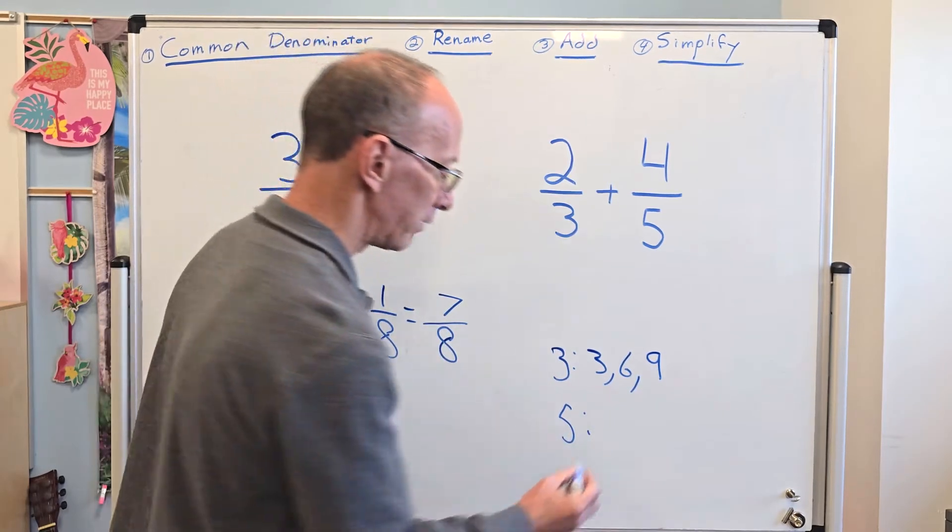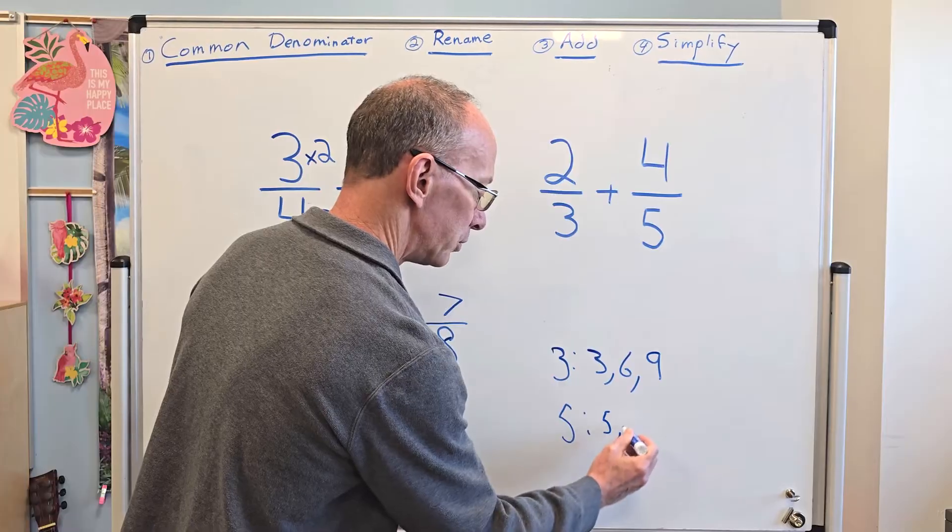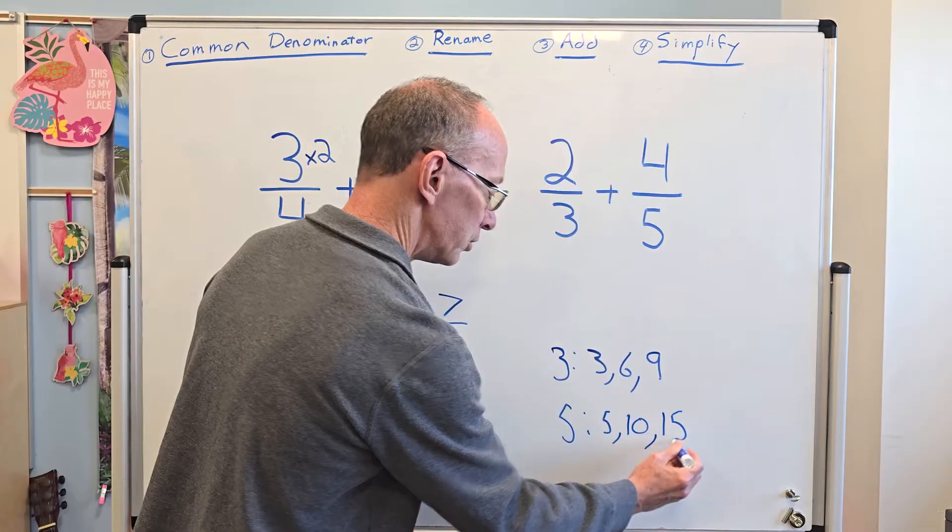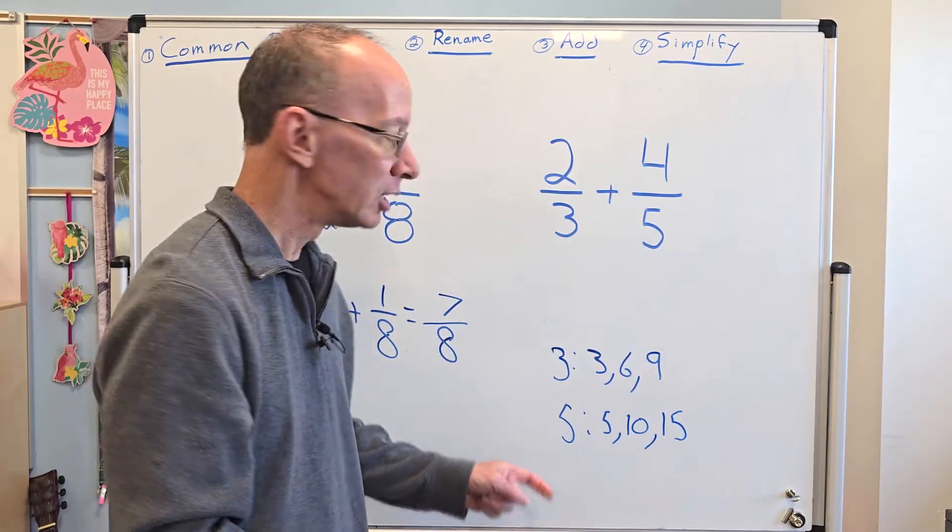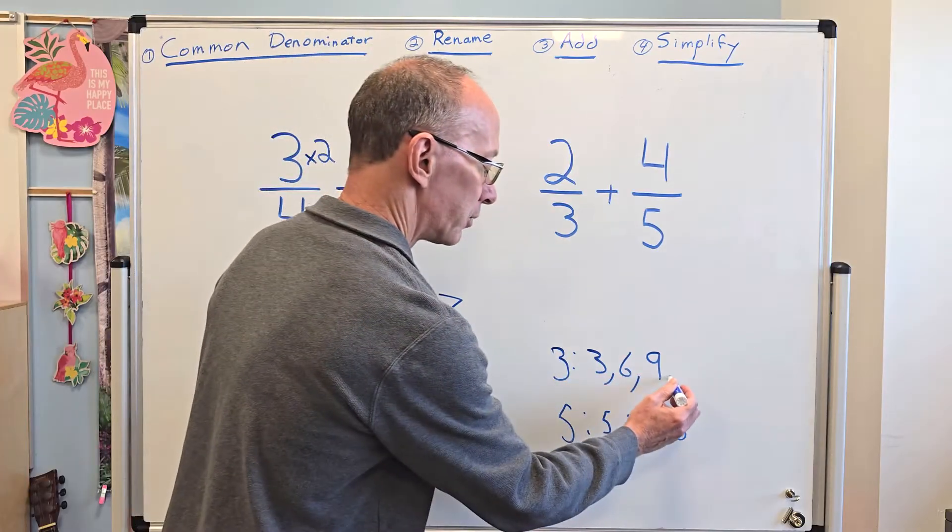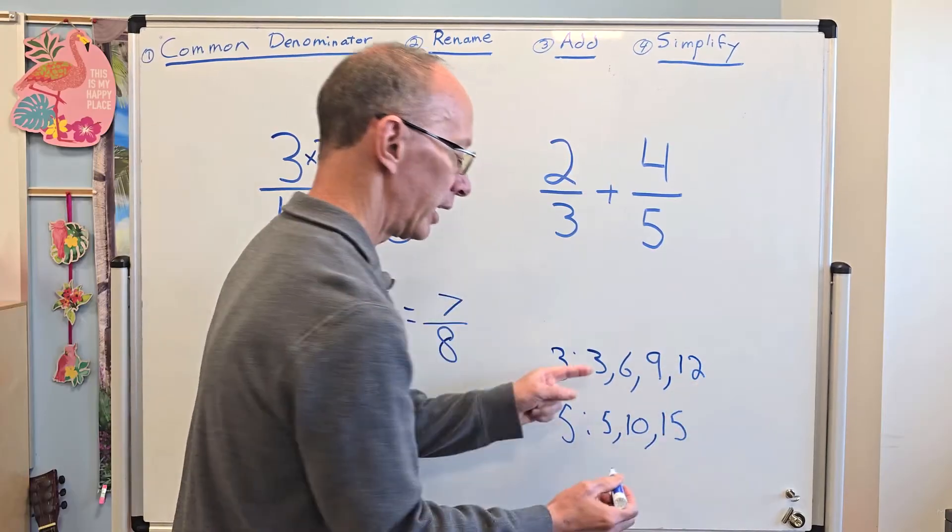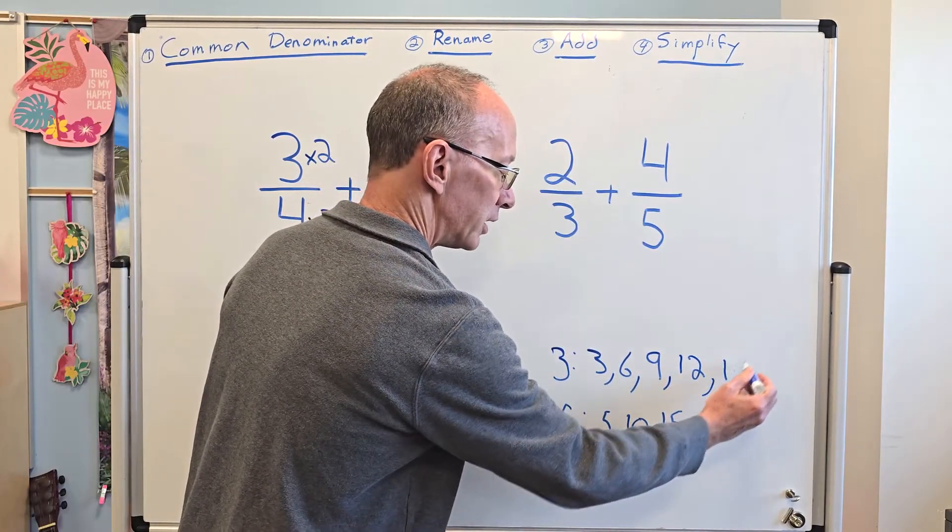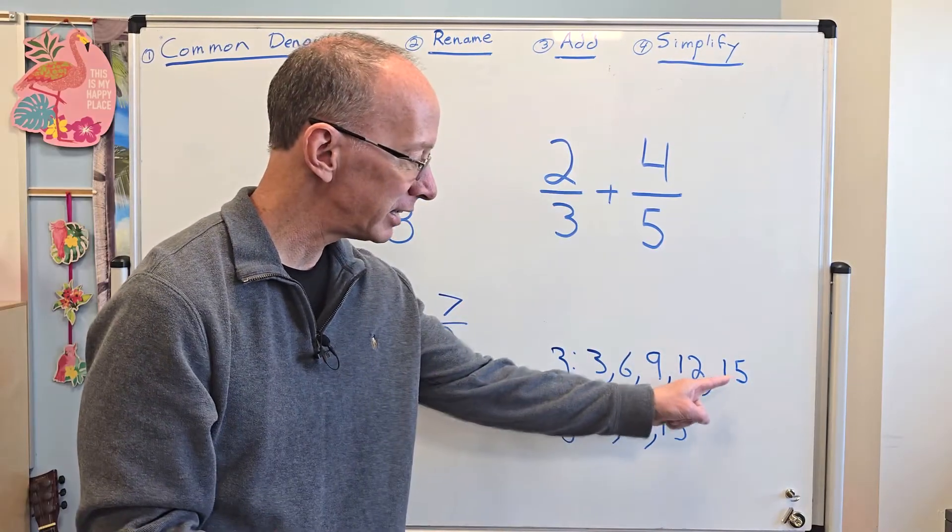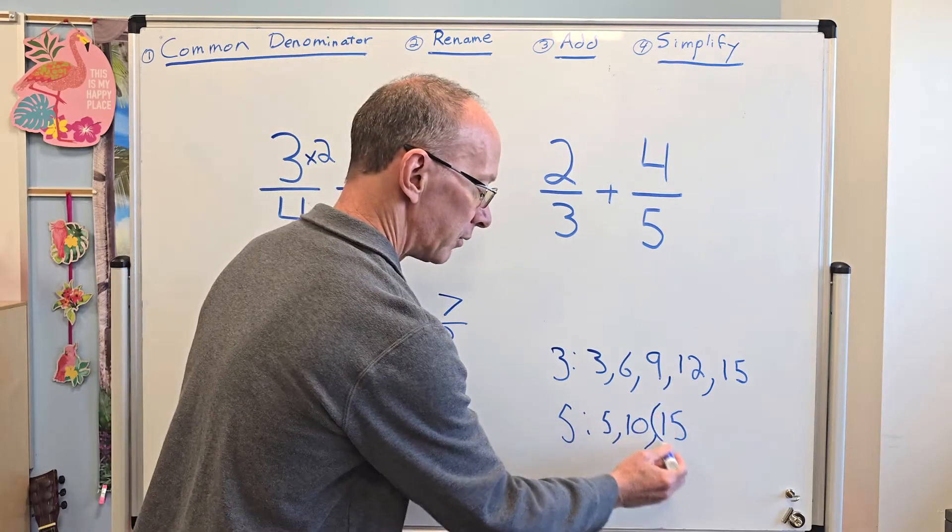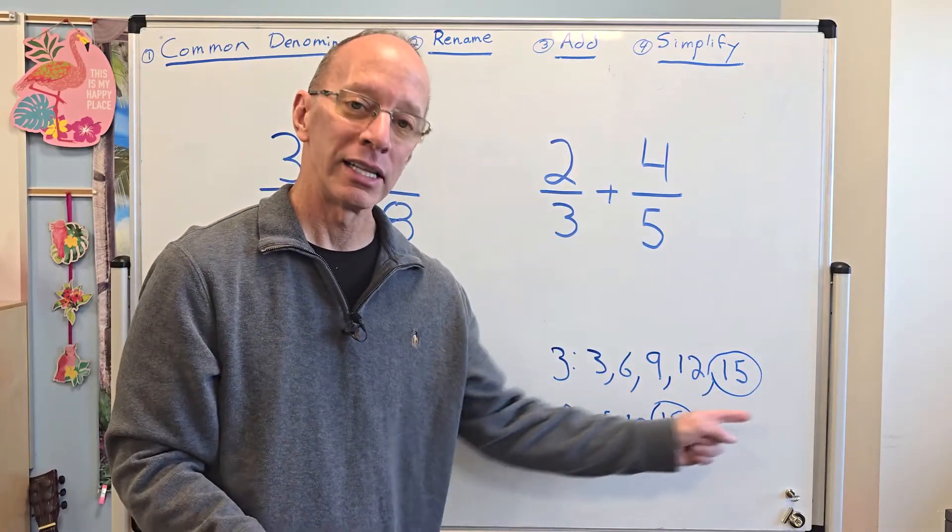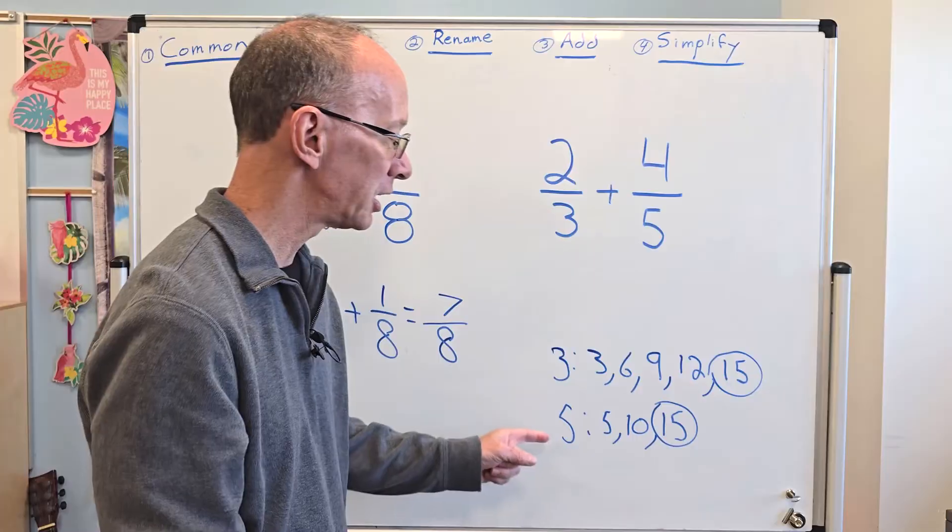Now I'm going to do five. Five times one is five. Five times two is 10. Five times three is 15. Now do they share anything in common? No, they don't. So I need to go a little bit farther. Let's do three times four is 12. And then three times five is 15. Now I see they both share in common the 15 right there.